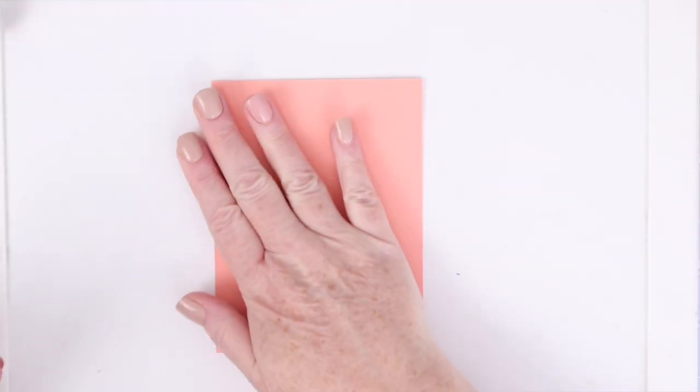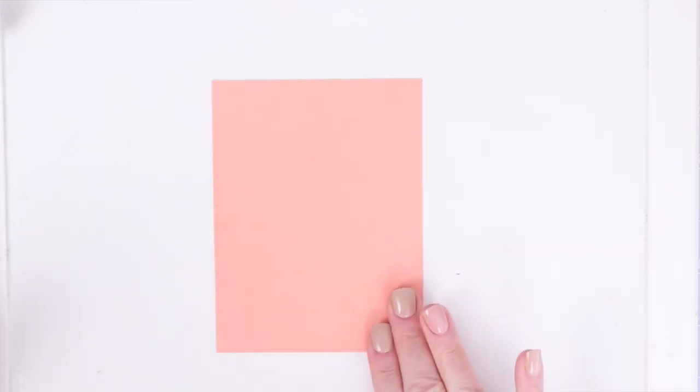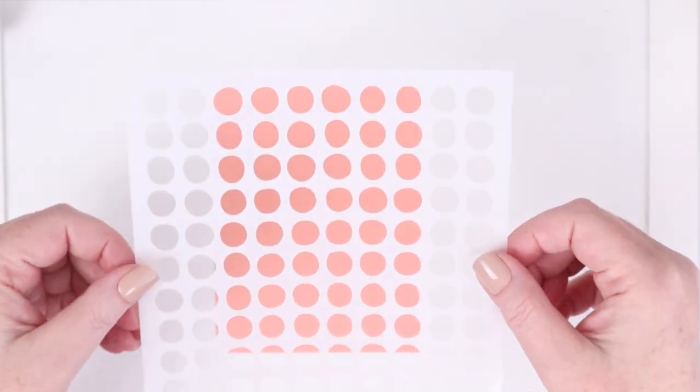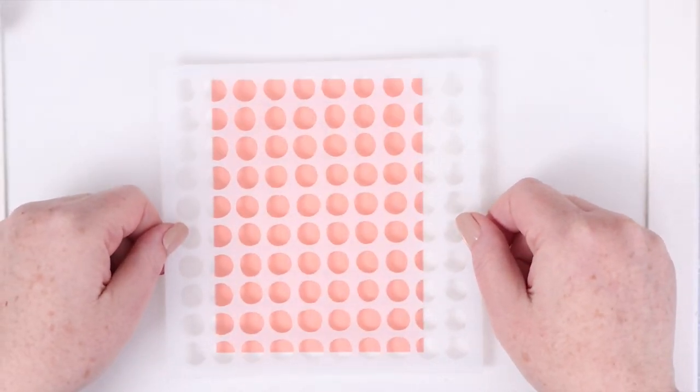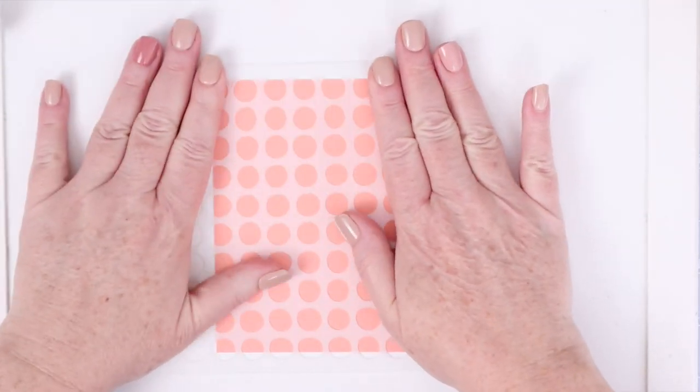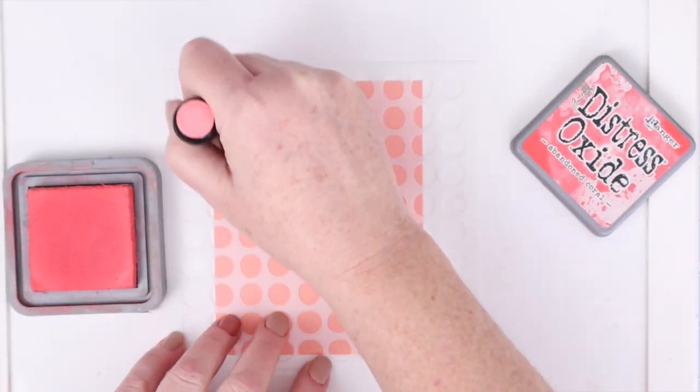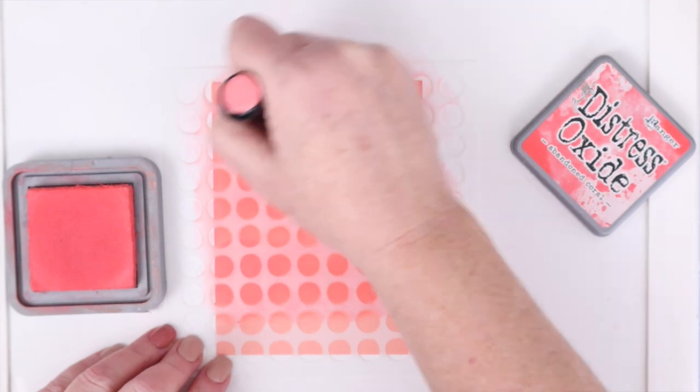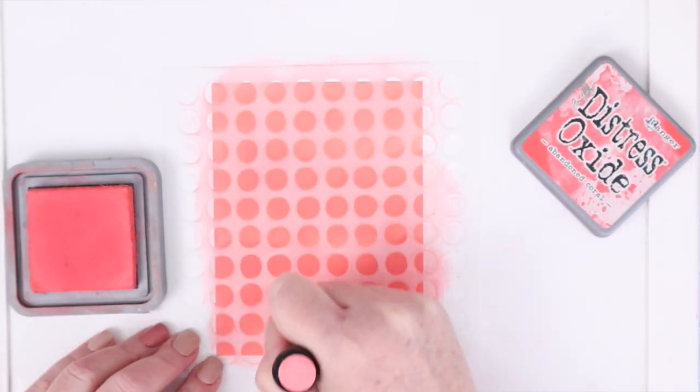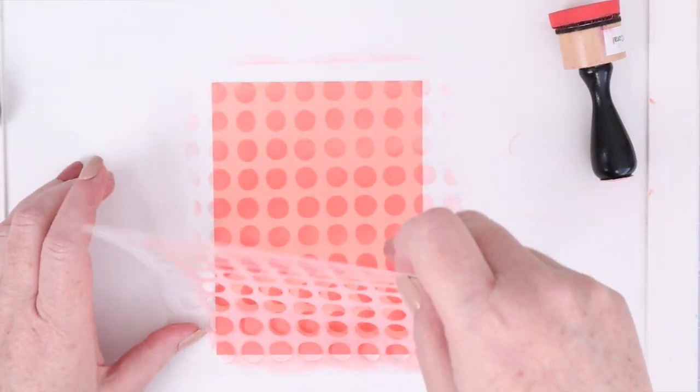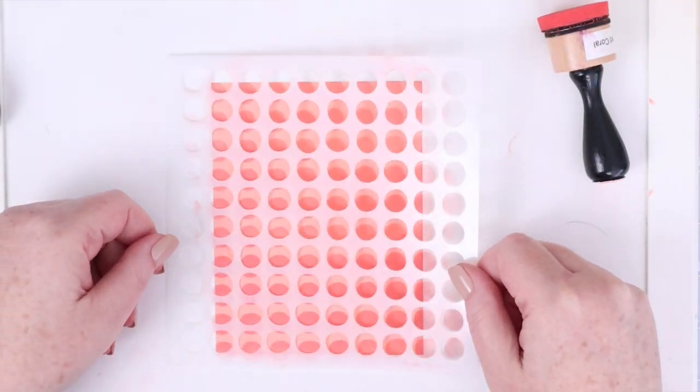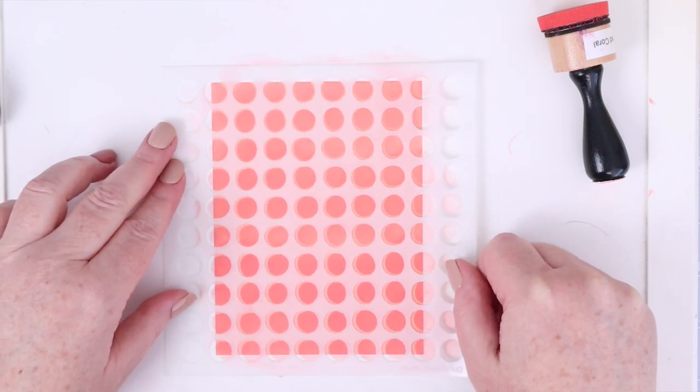First I lightly spray the back of the stencil with Pixie Spray. While the Pixie Spray on the stencil is drying, I placed a piece of Concord and Ninth Grapefruit cardstock down onto my mat and smooth it out to keep it in place. Once the Pixie Spray is dry on the stencil, I place it down on top of the cardstock and apply pressure to make sure it's temporarily adhered and stays in place. I want to ink blend an ombre background, so here I'm using very little pressure at the top of the stencil and increasing it as I move down the stencil with the most pressure and ink at the bottom.